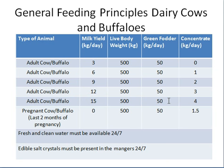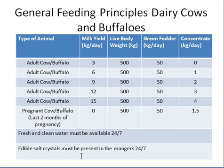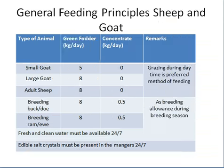Another category is the pregnant cow or buffalo, especially during the last two months of pregnancy. We give her 50 kilograms of green fodder and 1.5 kilograms of concentrate as a pregnancy allowance, because she needs more energy and protein for her calf. We must also provide fresh and clean water 24/7, and edible salt crystals must be present in the range at all times.